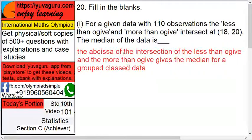I'll just give you the hint over here. The abscissa of intersection of less than ogive and more than ogive gives the median of the grouped class data. Abscissa means what? X coordinate.